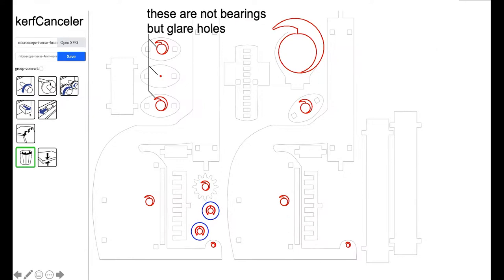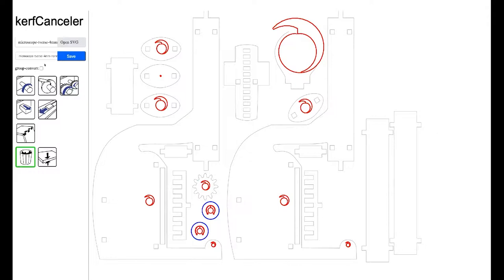These for example are not bearings but glare holes, where you look through in the microscope. And this big one here just holds a petri dish in place, instead of being a bearing itself. So let me just remove those incisions with the remove mechanism tool.